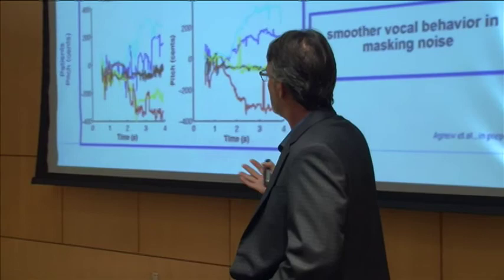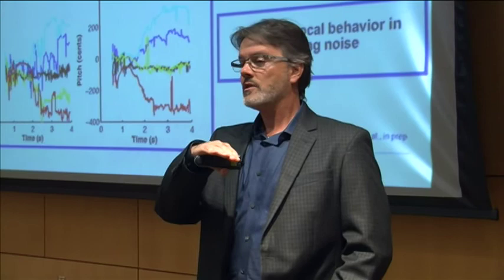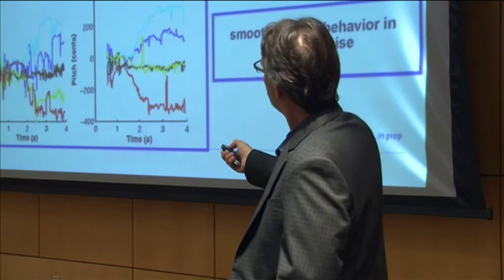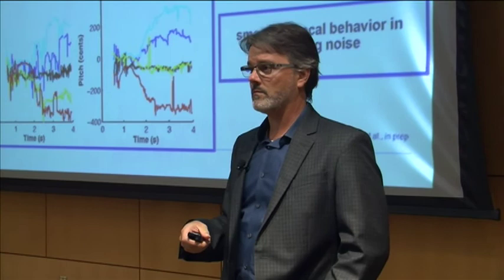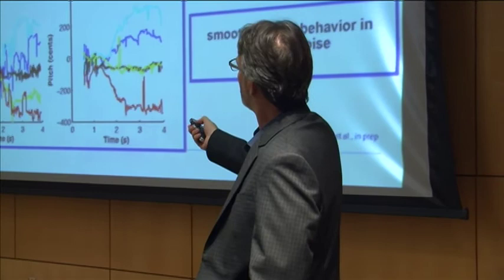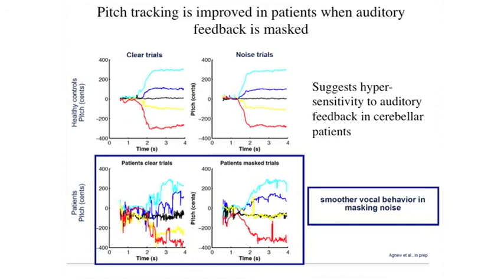We tested this by masking the auditory feedback in cerebellar patients during a pitch tracking task — humming to follow a heard pitch. In healthy controls, performance is similar whether or not auditory feedback is masked, because they can use somatosensory information about laryngeal tension. Cerebellar patients in clear trials are all over the place, but when you don't let them hear their own voice, they get considerably better — suggesting auditory feedback was pushing them around, consistent with this hierarchical sensory-motor circuit model.